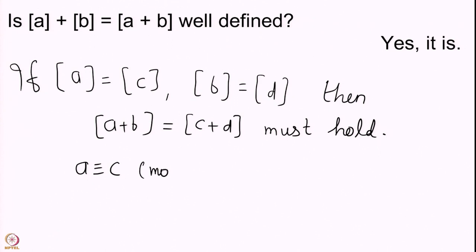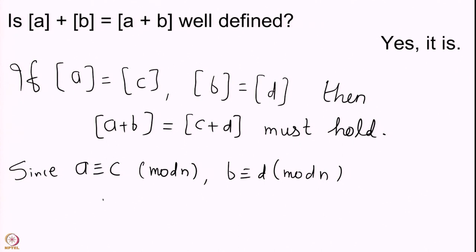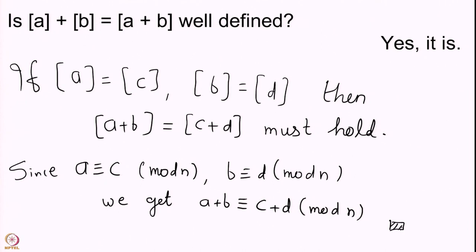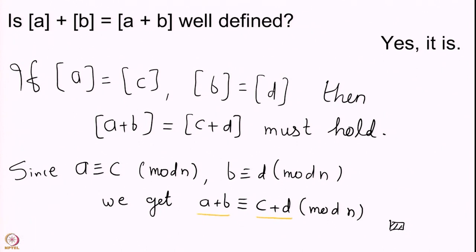How do we ensure this holds? First of all, because class A is class C, we have that A is congruent to C mod N. This is given to us, and we also have B congruent to D mod N. We have seen that whenever A is congruent to C mod N and B is congruent to D mod N, A plus B is congruent to C plus D mod N, which means these two classes are the same. So the addition is well defined.